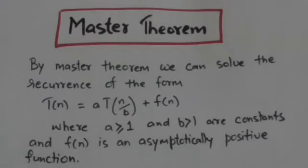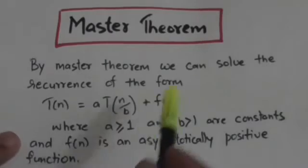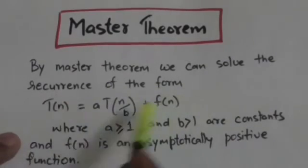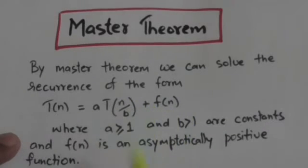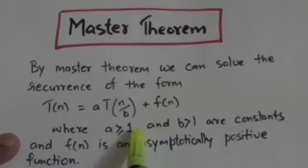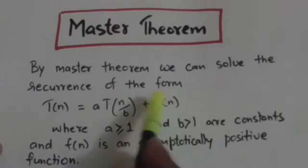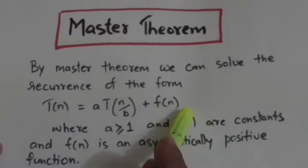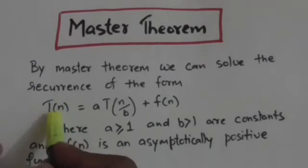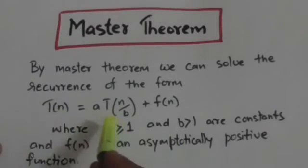Hello friends, welcome back. In this tutorial we will study about the master theorem. Master theorem is a way of solving recurrences. By master theorem we can solve the recurrence of this form: T(n) = a·T(n/b) + f(n), where a and b are constants. The value of a is greater than or equal to 1, and the value of b is greater than 1, and f(n) is an asymptotically positive function. This recurrence describes the running time of an algorithm that divides the problem of size n into sub-problems.